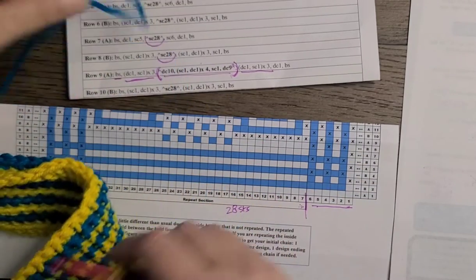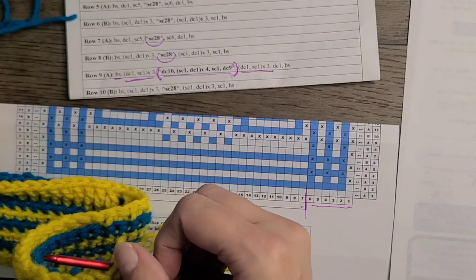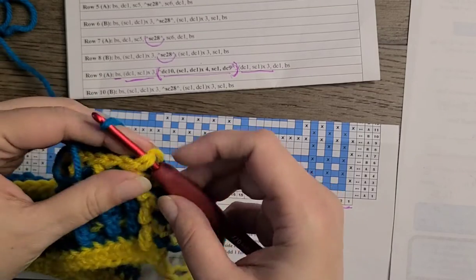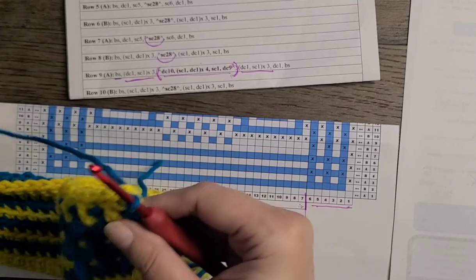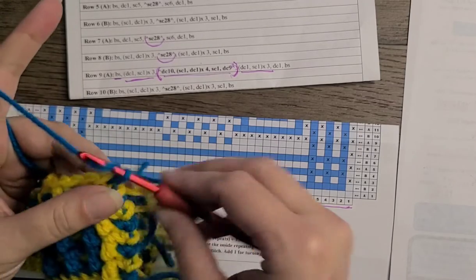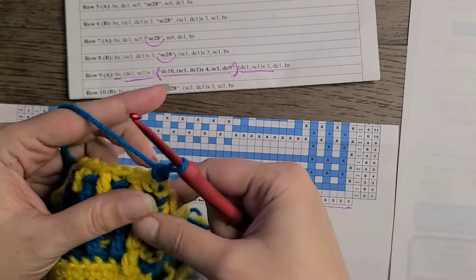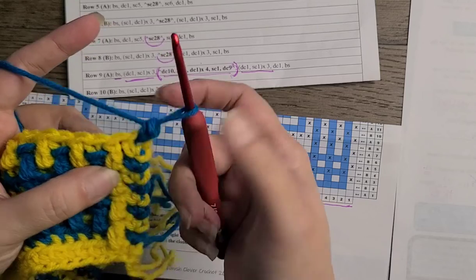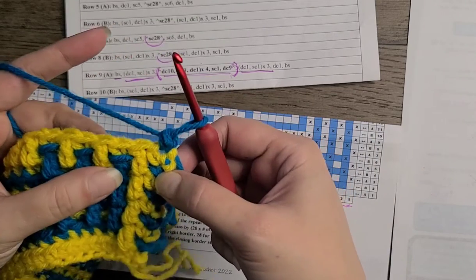So you're going to go ahead and attach your yarn with the border stitch on the side. Do that little chain one, you do another SC right into the same hole right there, and then I just like to pull it tight a little bit. So the first...